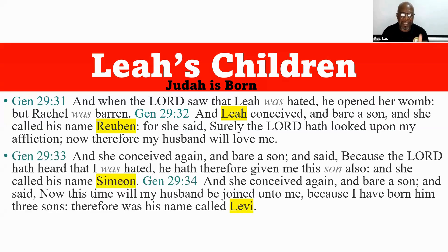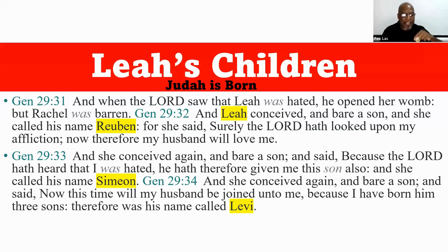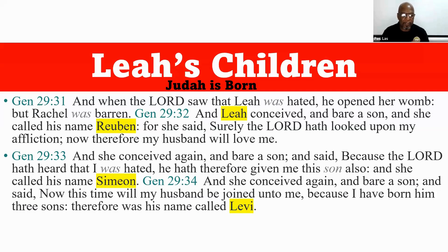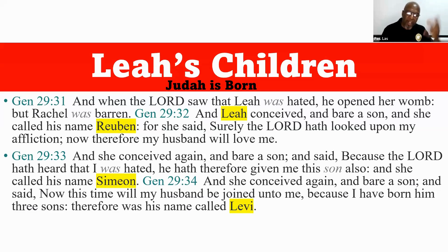And Leah conceived again and bore a son, and said, 'Because the Lord hath heard that I was hated, he hath therefore given me this son also,' and she called his name Simeon. And she conceived again and bore a son and said, 'Now this time will my husband join unto me, because I have borne him three sons,' and his name was called Levi. And from Levi, we're going to get the Book of Leviticus. Now, if each child came nine months apart, can you imagine how long Leah had been trying to get Jacob to love her?